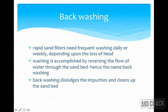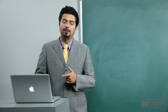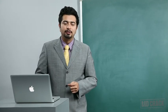Washing is accomplished by reversing the flow of water through the sand bed — hence the name backwashing. The water flows back, dislodges all the impurities towards the top, and the filter is cleared. Water that was flowing downwards now flows upwards, and thus the filter gets cleared. Remember, slow sand filter cleaning was done by scraping, whereas the rapid sand filter is cleaned by backwashing.